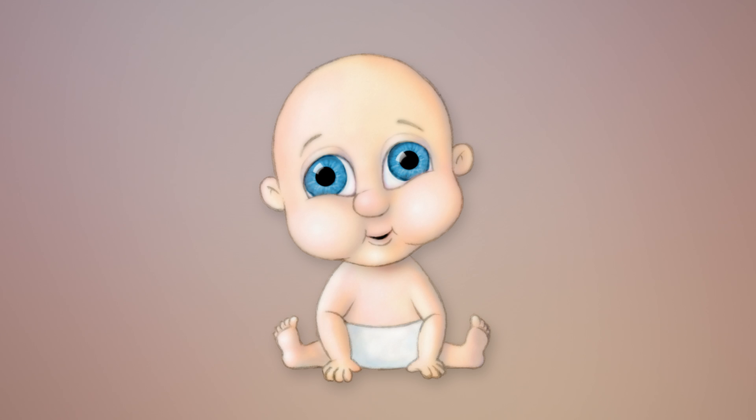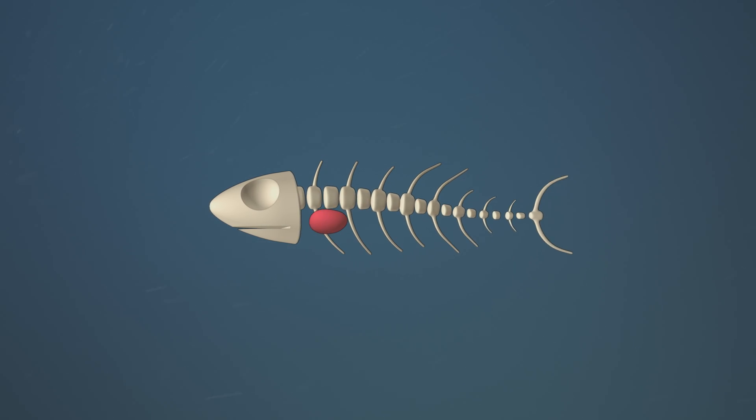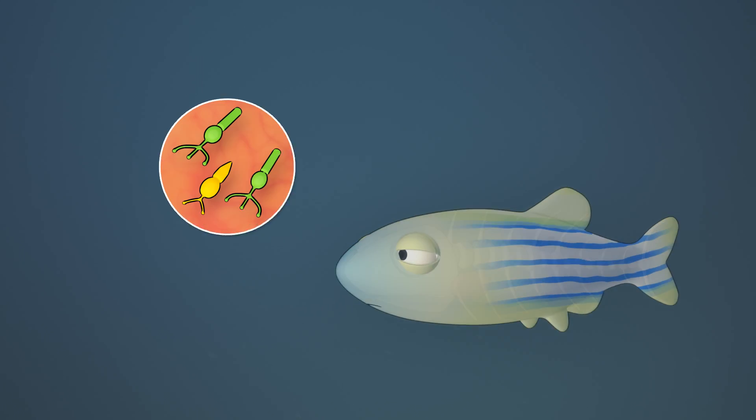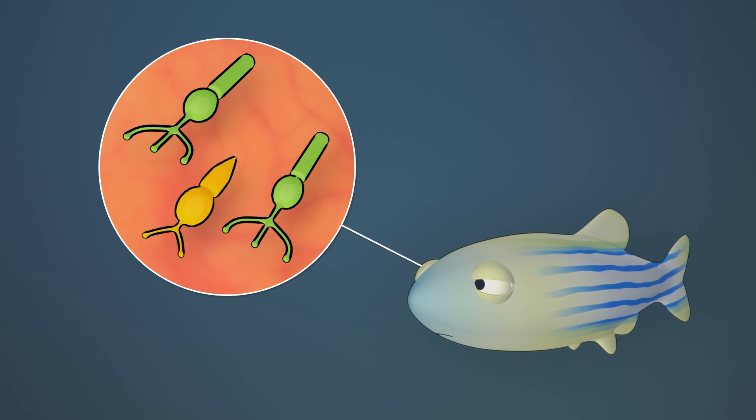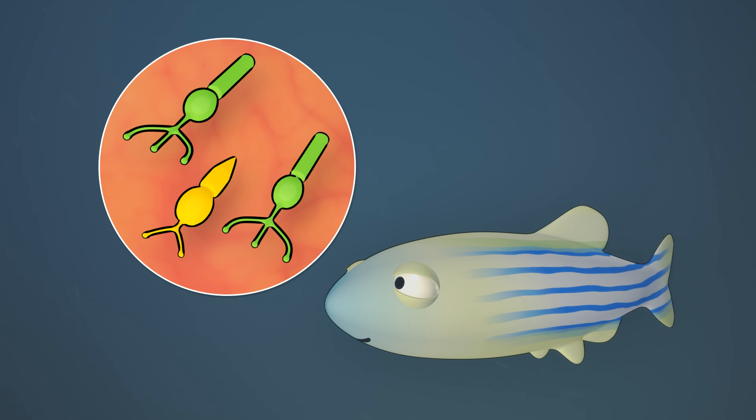But that isn't the case for all animals. Take the zebrafish, a master regenerator. It can grow back its skin, bones, heart, and retina after they've been damaged. If photoreceptors in the zebrafish retina are removed or killed by toxins, they just regenerate and rewire themselves to the brain to restore sight.